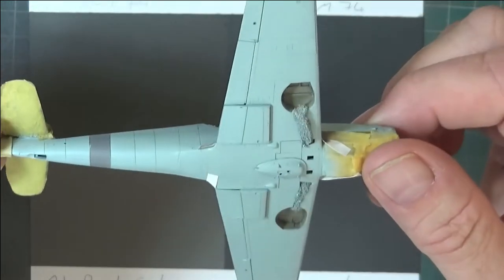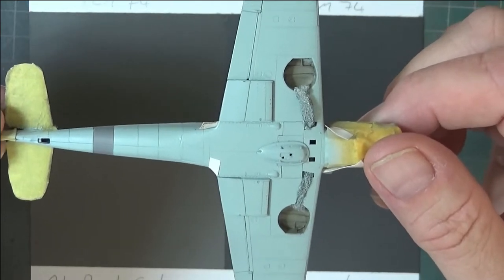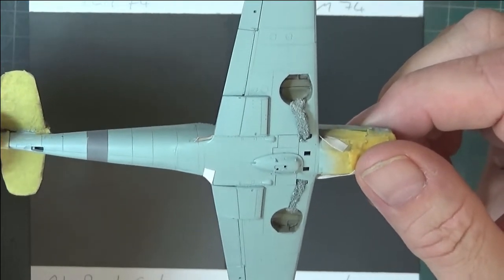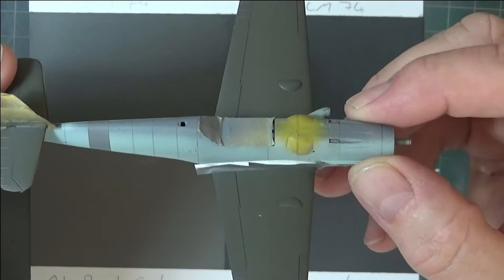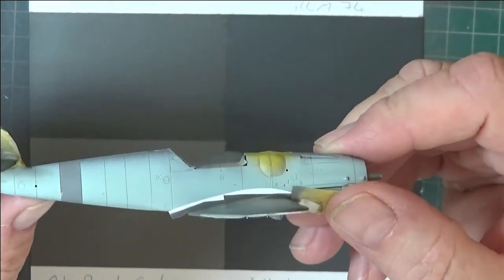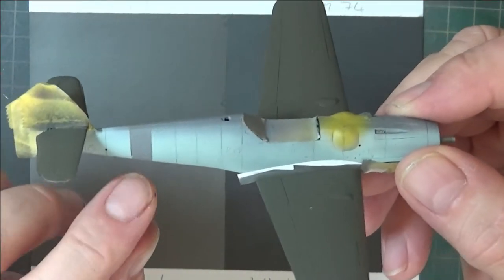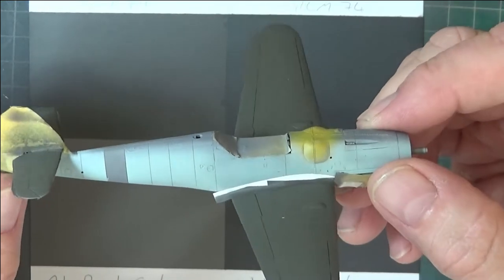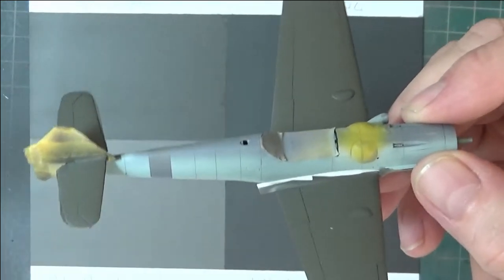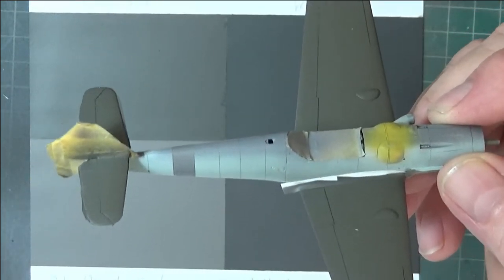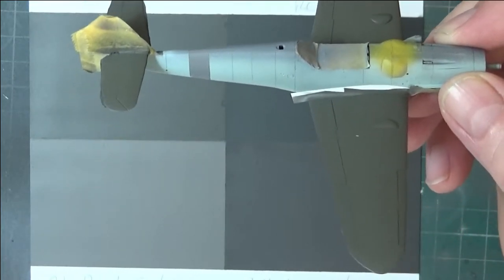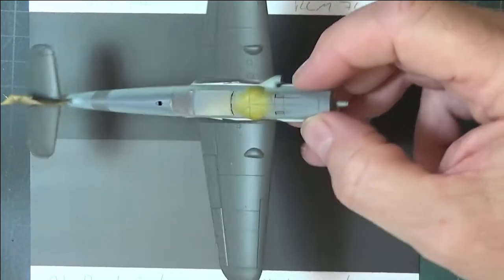I sprayed the underside using Vallejo's RLM76. The stripe on the fuselage needs a bit of touch up I just noticed, was a mix of two Tamiya colors which escapes me. Have I got the instructions here? Bear with me for two seconds.